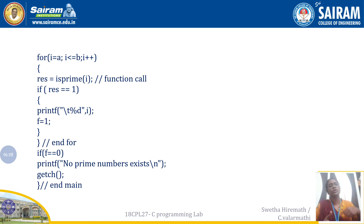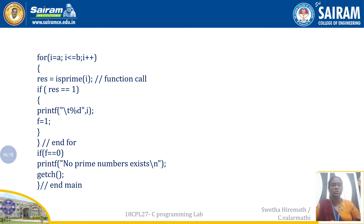The for loop continues to the next element, calling isPrime again. If the next element is prime, result equals 1; otherwise 0. If F equals 0 at the end, it means no prime numbers exist in the given range. That case is also handled and displayed.